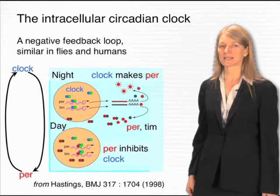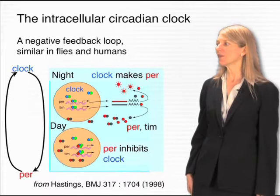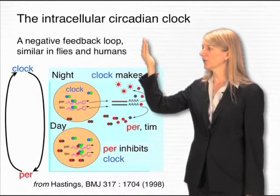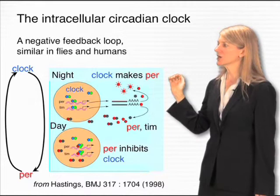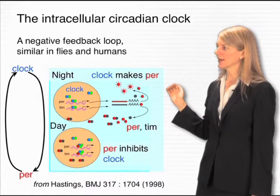A series of molecular studies from many different labs has led to the elucidation of this circadian clock. The PER gene is an important element, but there are other molecules involved as well. These molecules function within the cell to regulate patterns of gene expression and regulate each other's gene expression through a negative feedback loop. During the night, a transcription factor named CLOCK drives the expression of the PER gene, which was identified from that early fly screen.